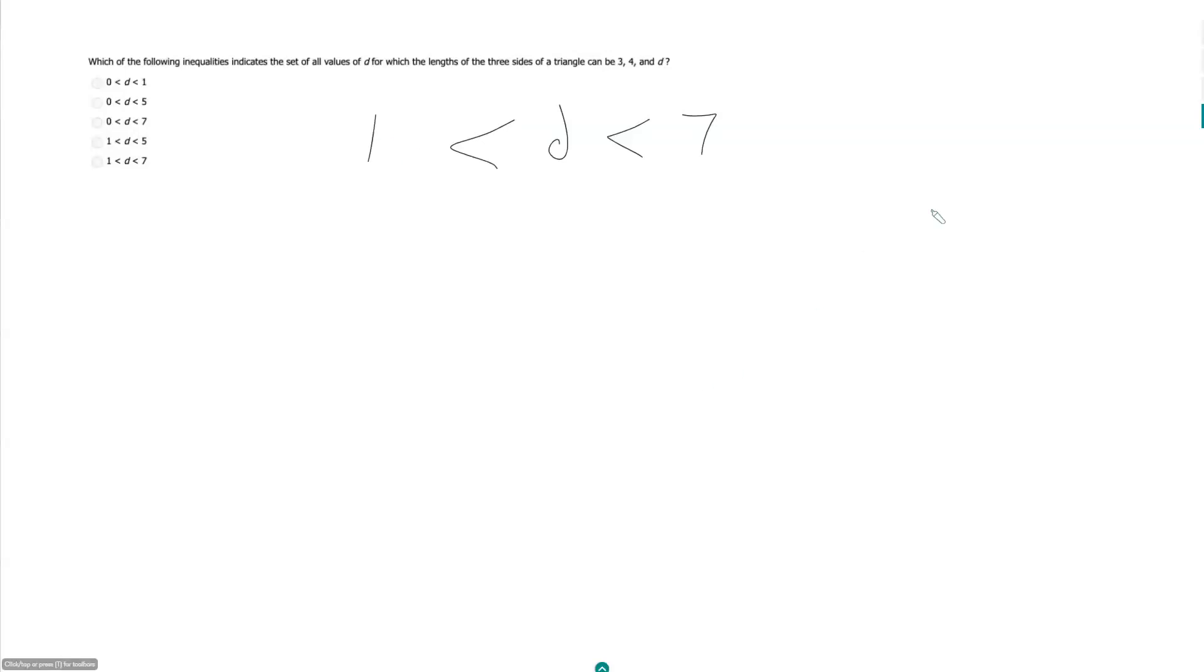But let's work backwards here. How do we get that? Say we have a triangle and our sides are 3, 4, and D. So what does this mean?